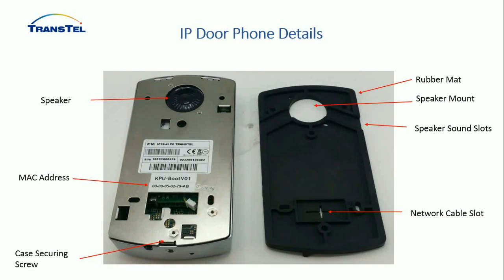Looking at the back of the door phone: the speaker is weatherproofed and water resistant. Further down, there is the MAC address information and a hole beneath it where the network cable enters. There is a case securing screw at the very bottom, and a little cable slot with a rubber bung that can pop out for cable ingress at the bottom. On the right-hand side of that is the microphone.